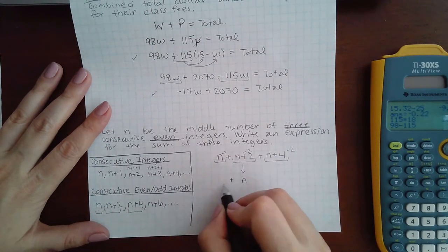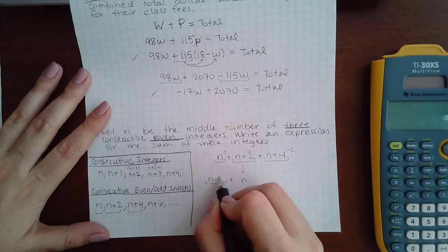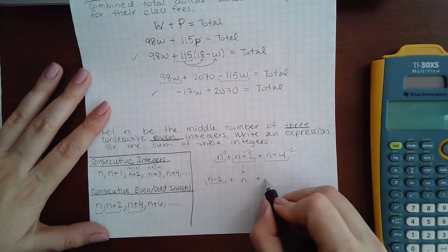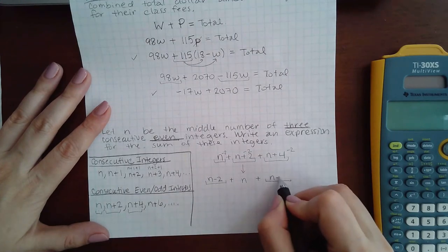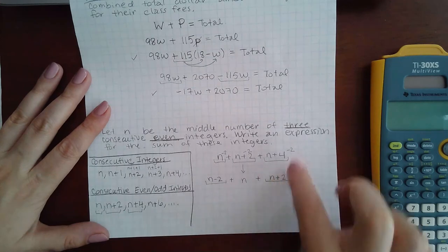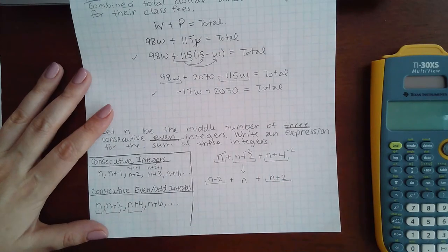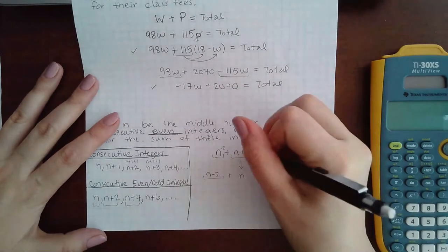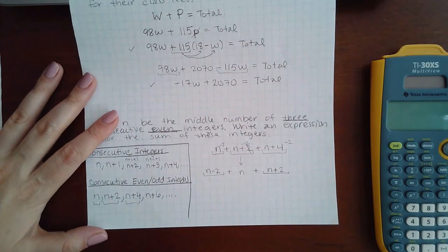So then the first one becomes n-2, and then the last page will become n+2, because four minus two is positive two. And here it just took that away so that the middle number was n.